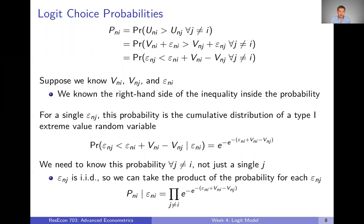We model utility as being capital V — representative utility — plus epsilon, this random unobserved utility term. So we can just plug those in. We have the same expression with two new variables substituted on each side. Now let's rewrite this, putting epsilon sub n j on the left hand side and the other three terms on the right hand side.